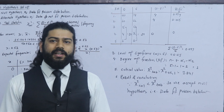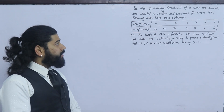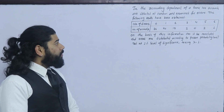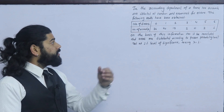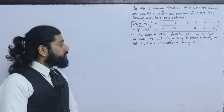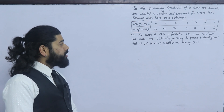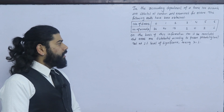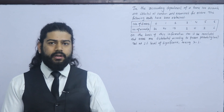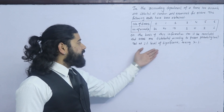Second question: In a bank, 100 accounts are selected at random and examined for errors. The following results have been obtained — number of errors: 0, 1, 2, 3, 4, 5, 6; number of accounts: 36, 40, 19, 2, 0, 2, 1. On the basis of this information, can it be concluded that errors are distributed according to the Poisson probability law? Test at 1% level of significance.